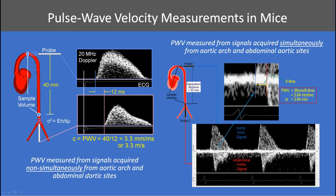This is the non-simultaneous method of measuring pulse wave velocity — measuring at the first location, then moving to the second. We can also combine the two signals to present them as simultaneous, where this pulse appears at the first site and then the same pulse appears at the second site. Simultaneous measurement leads to fewer errors in pulse wave velocity estimation.